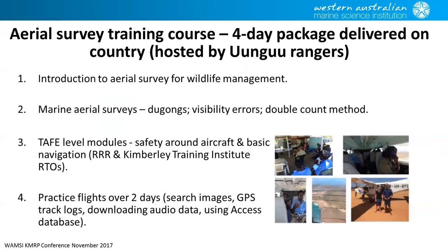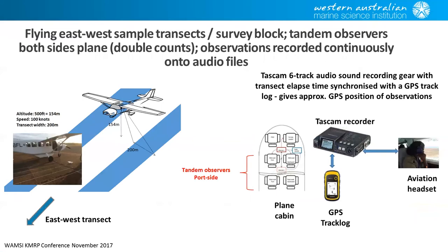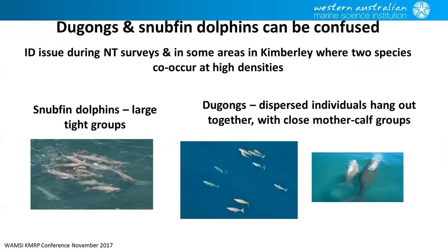The aerial surveys use two observers on each side of the plane in a blind approach — front observers don't know what back observers are recording and vice versa. They fly at 500 feet at around 100 knots, with a transect width of about 200 meters — standard aerial procedure for Dugong surveys. One thing observers were specifically trained to distinguish was the snubfin dolphin, the species most visually similar to a Dugong in the Kimberley, with differences based on surface behavior and grouping patterns.